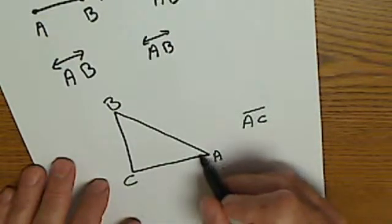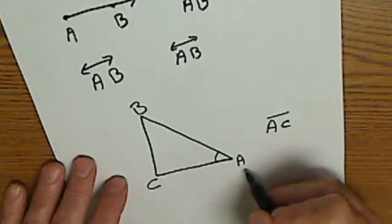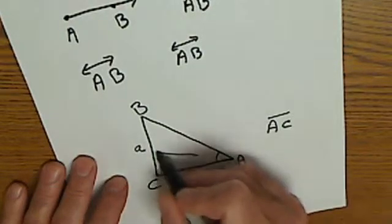These points are also called the vertices of the triangle. The vertex is always a capital letter. The length of a side of the triangle is the lowercase letter opposite that given angle.